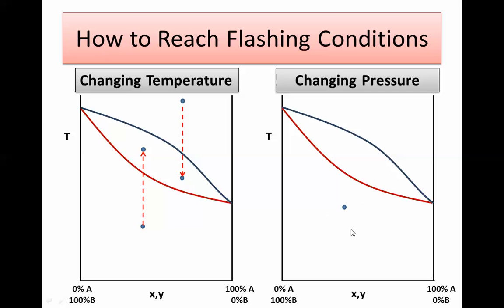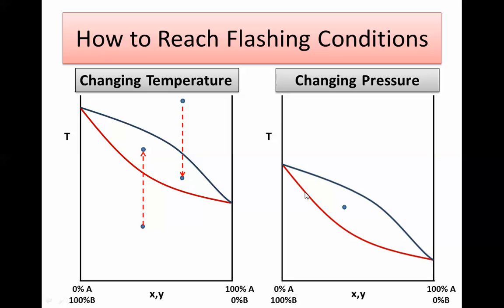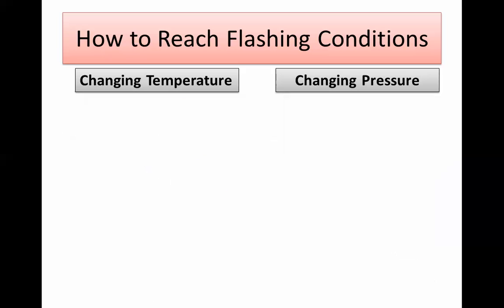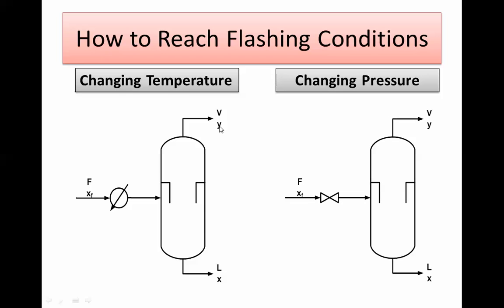The other approach, which is very common in process plants, is by changing pressure. If it's not possible or not recommended to change temperature, you can change the pressure instead. As we remember from previous videos, you can change pressure to change the boiling temperature — if you reduce the pressure, the wet region shifts down until it reaches your system's operating point. Either way works depending on your process. On a flow sheet you'll commonly see a cooler or heater before the flash separator, or a throttling valve to reduce pressure so the system enters the wet region.